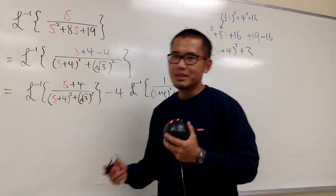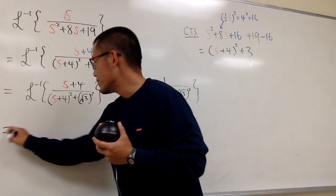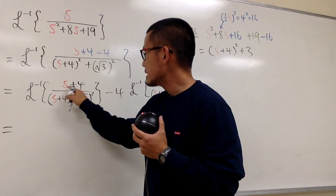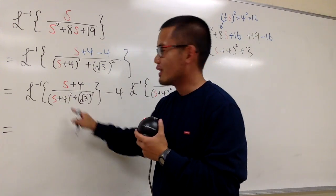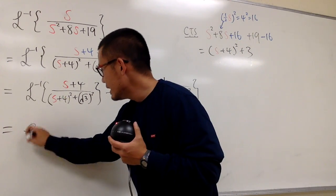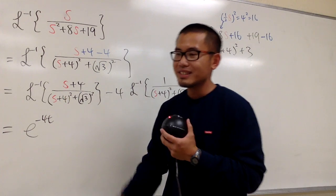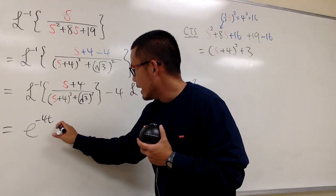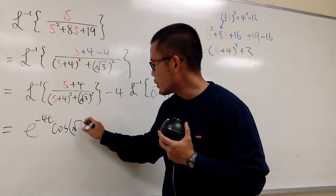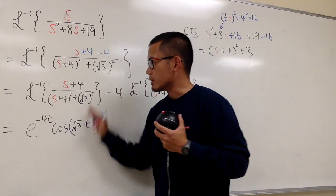Okay, this is going to be the combination of e to the something and cosine of something. So let's put this down right here first so we can feel better. You know s minus negative 4, so therefore a is negative 4, and we will have e to the negative 4t because this right here has been shifted for the cosine. And we will have the cosine. The b in this case is square root of 3, so be sure you write down square root of 3 and then the t like this. So this is that right here.